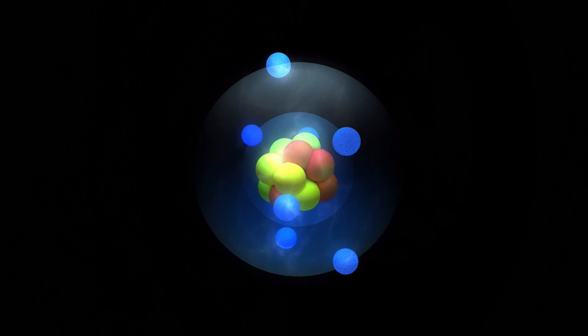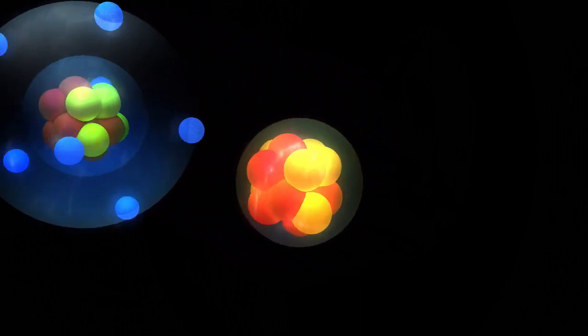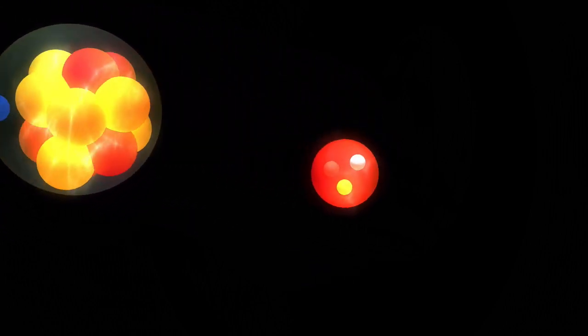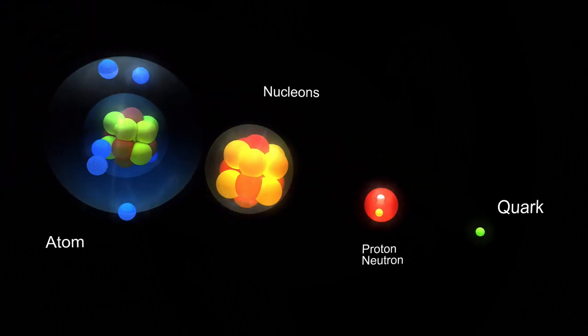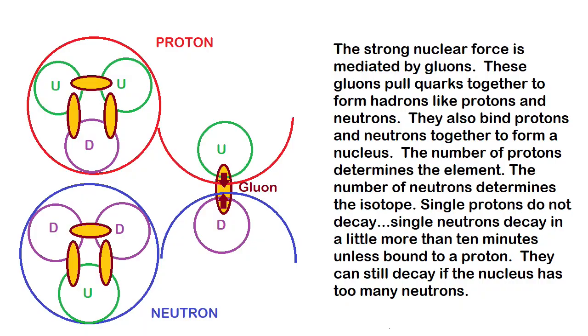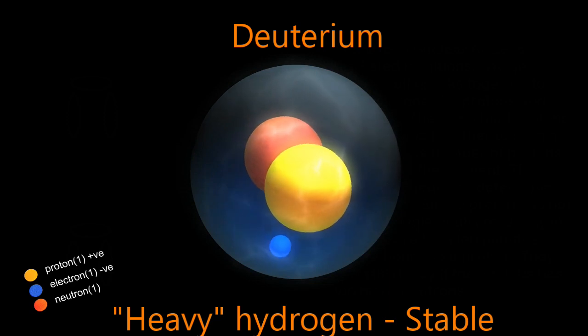The quarks joined together to make hadrons like protons and neutrons. The protons, having a positive charge, started grabbing up negatively charged electrons to balance out and formed the simplest atom in the universe, hydrogen. Some of the neutrons flying around locked onto protons by the strong nuclear force, which acts between quarks using gluons to transmit this force.